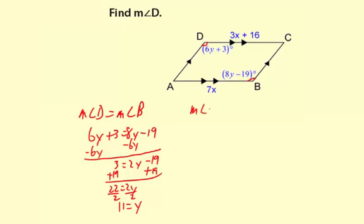Now the measure of angle D is represented by 6y plus 3 degrees. And I know y is 11, so I can substitute. It's going to be 6 times 11 plus 3. I'm going to leave off the degrees for convenience, but I'll keep it in mind, so I'll put a degree symbol at the end.